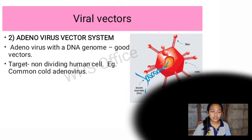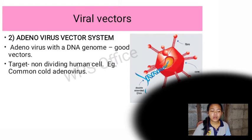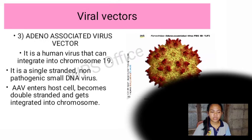The second viral vector is the adenovirus vector system. Adenoviruses have a DNA genome and are good vectors. Their target is non-dividing human cells. A common example is the common cold adenovirus.